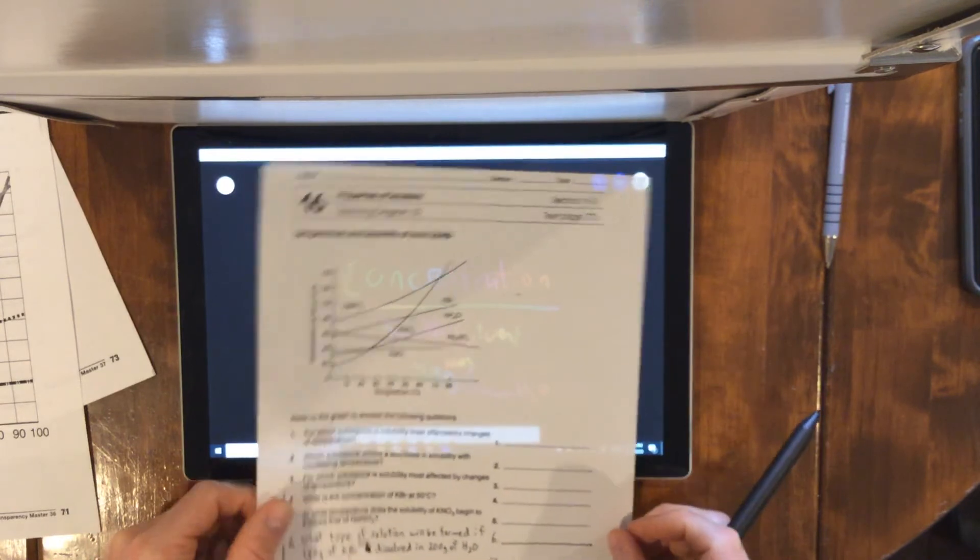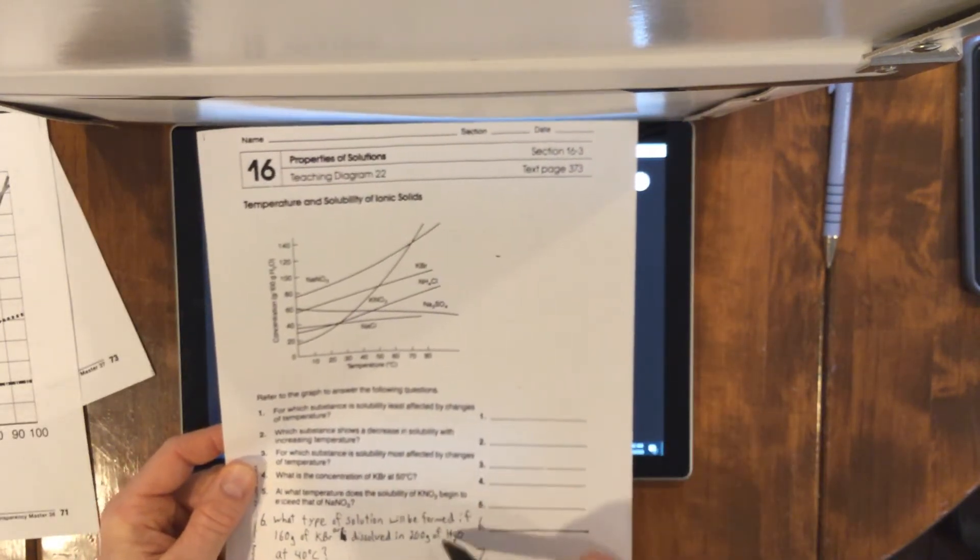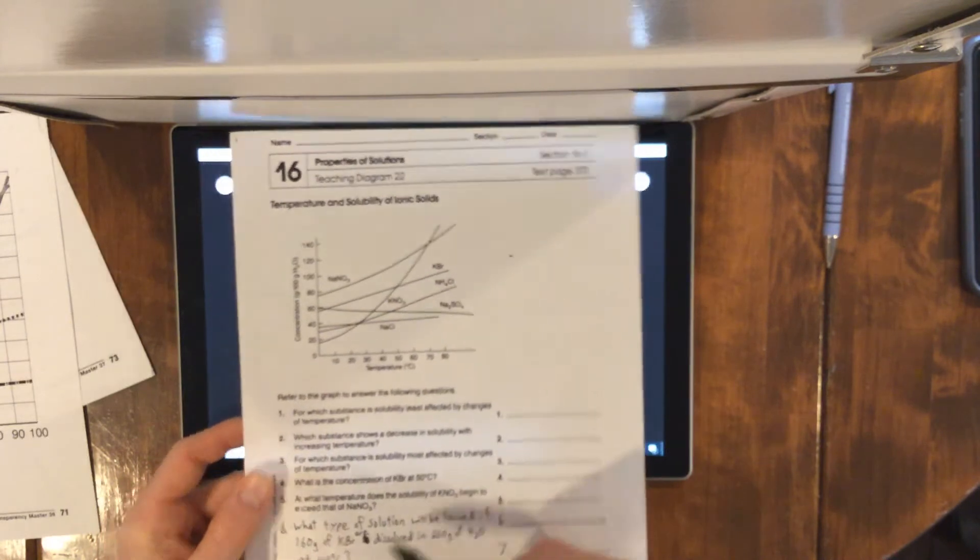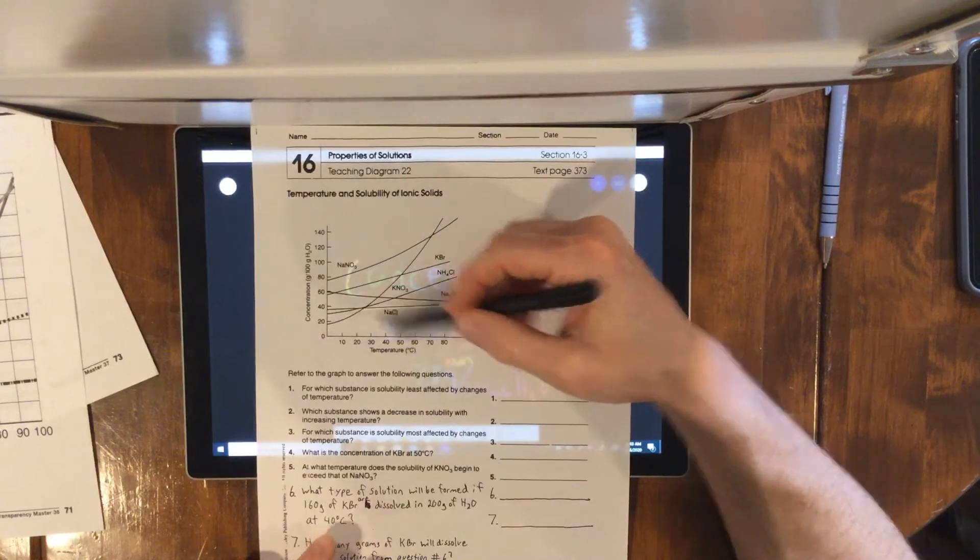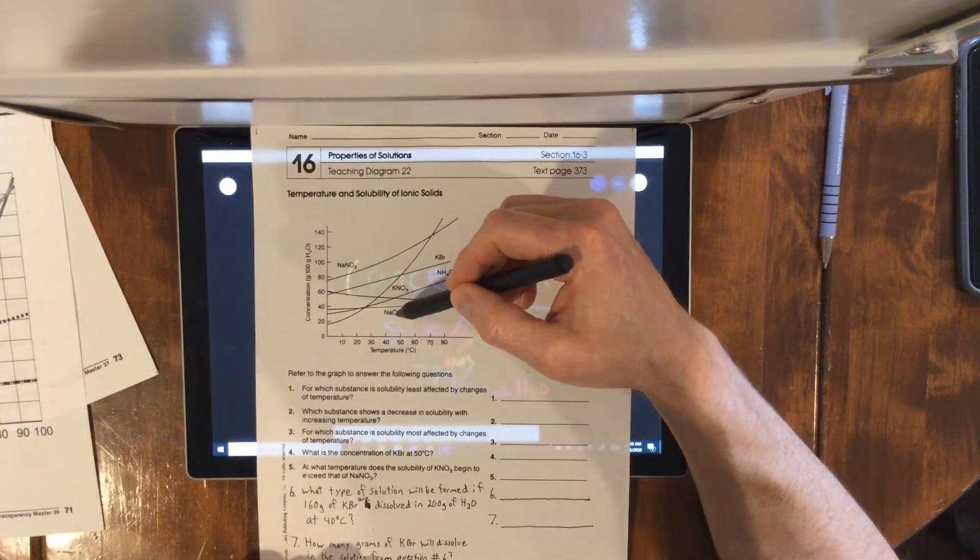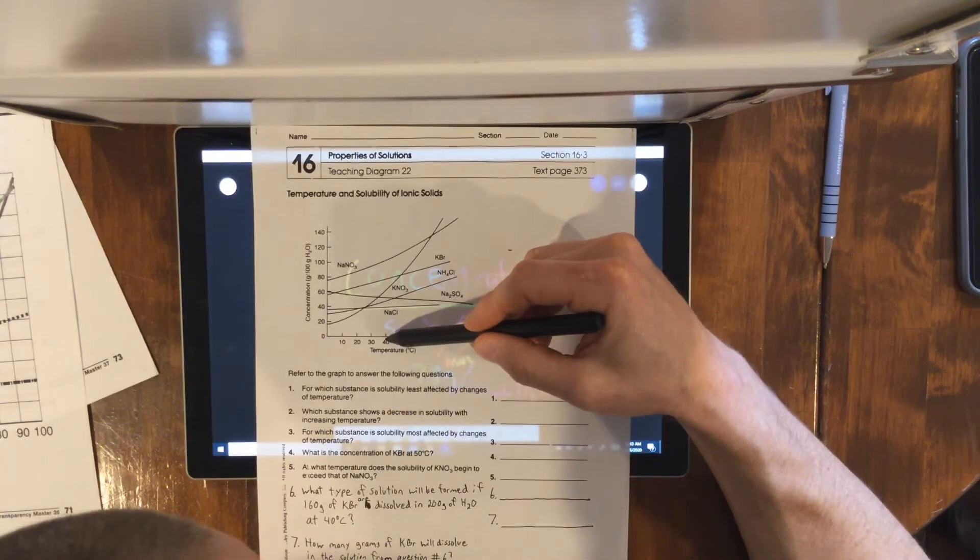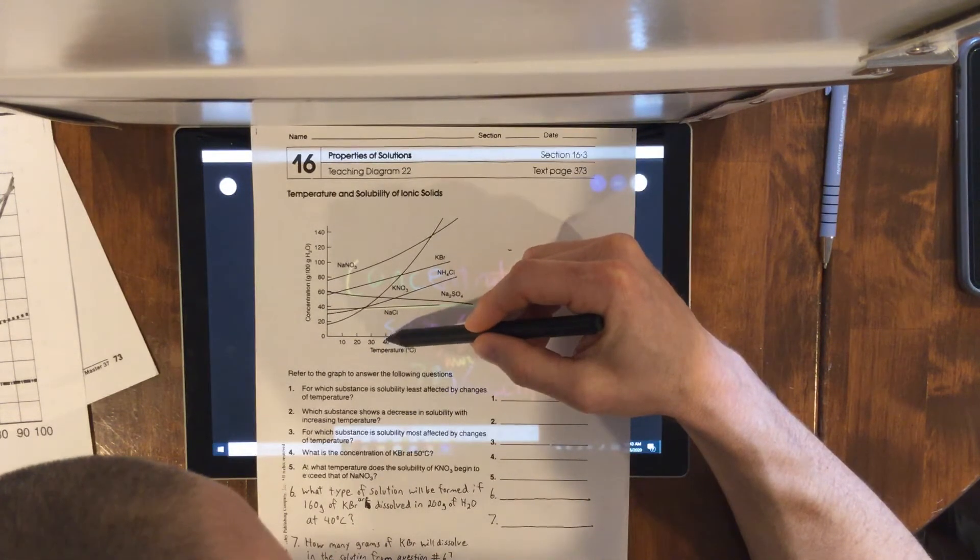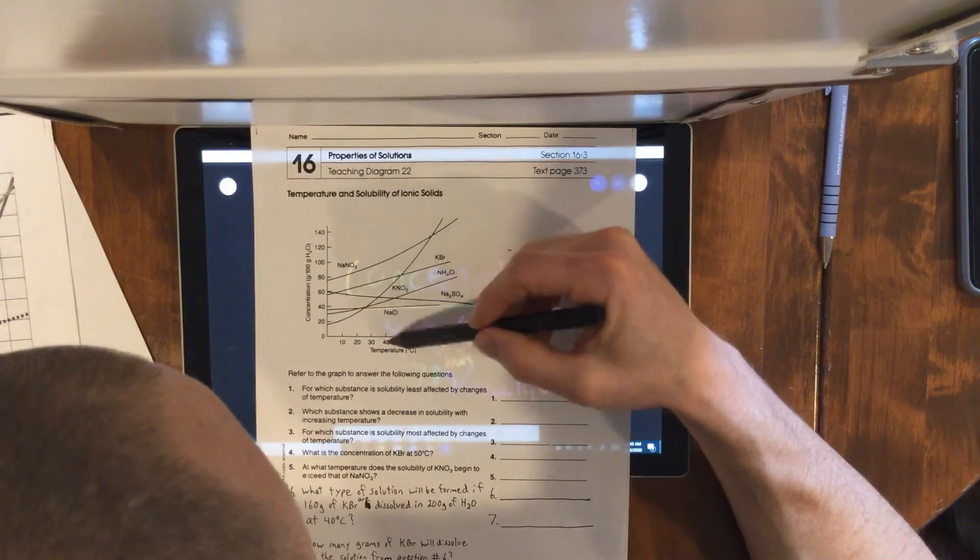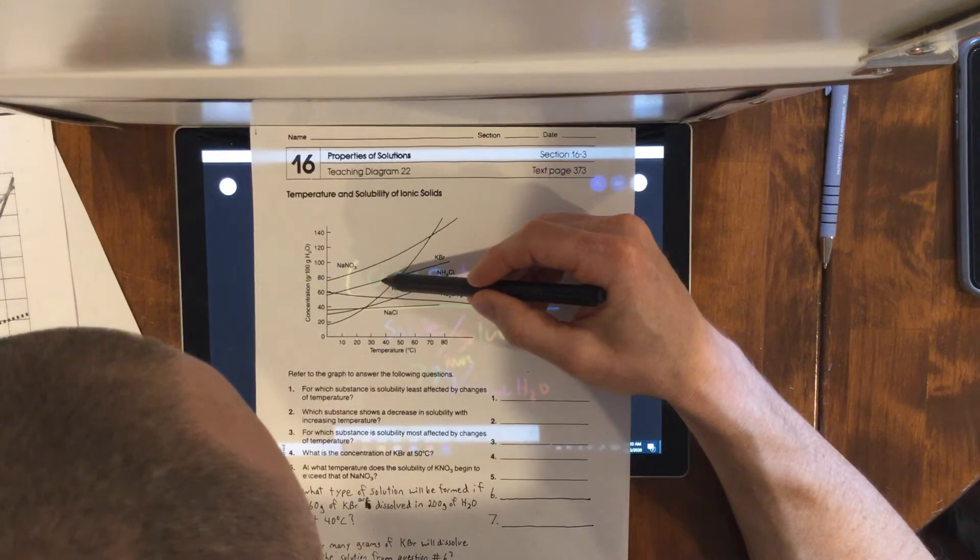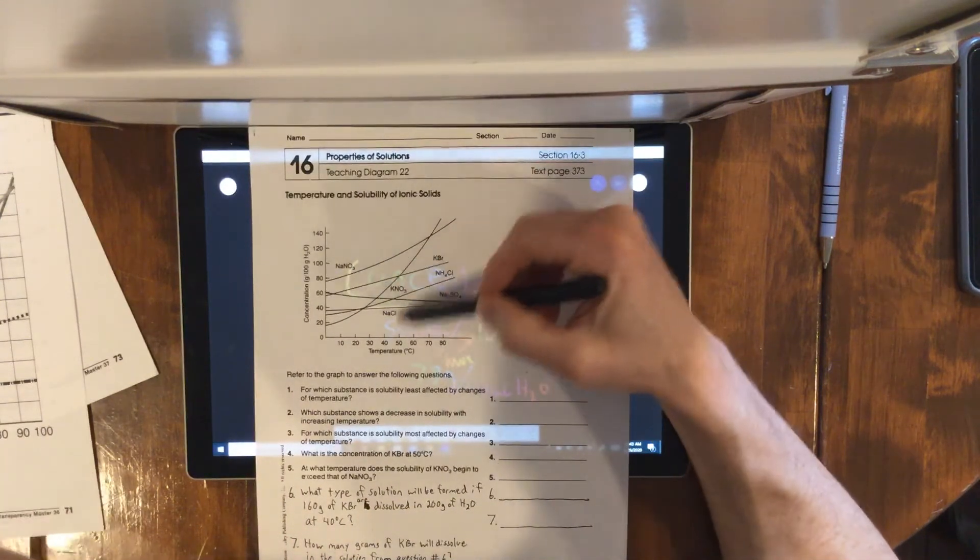What type of solution will be formed if 100 grams of KBr dissolved in 200 grams of water at 40 degrees? So if we're at 100 grams at 40 degrees, we go to 40 degrees up to KBr, and that looks like it's pretty close to 80 but a little less.